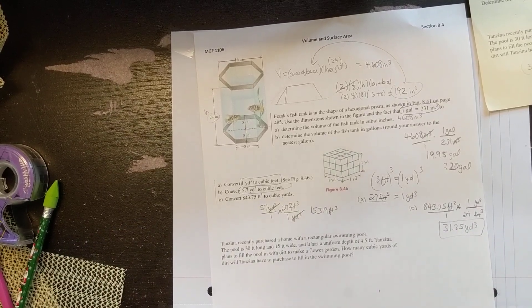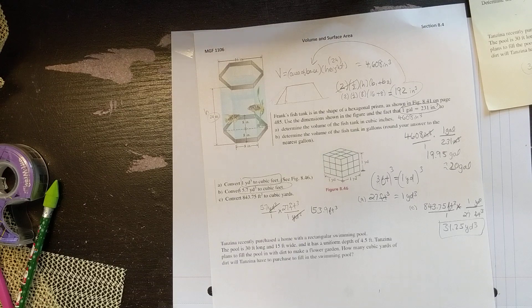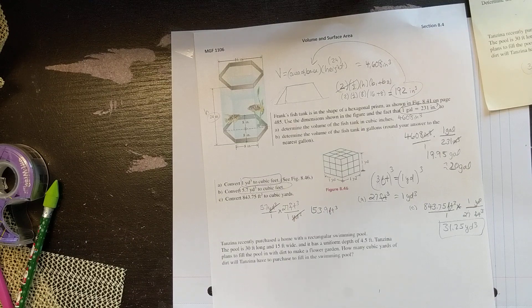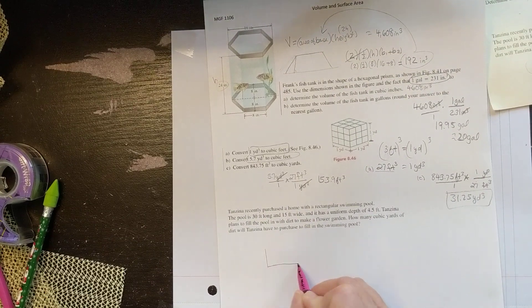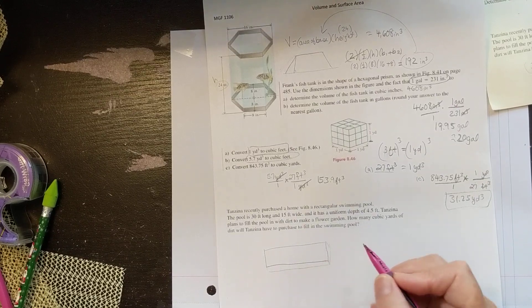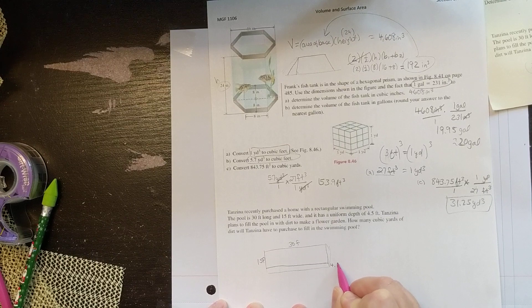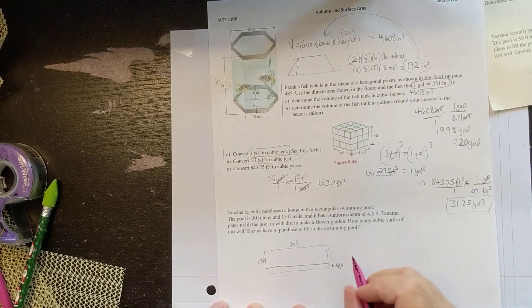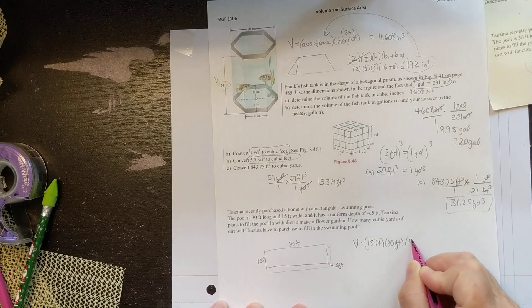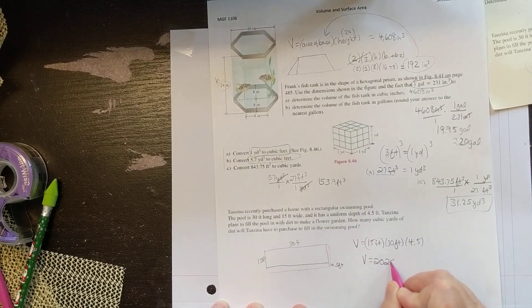Last one. Tenzina recently purchased a home with a rectangular swimming pool. The pool is 30 feet long, 15 feet wide and has a uniform depth of 4.5 feet. She plans to fill the pool with dirt to make a flower garden. How many cubic yards will she need to fill the pool? So here is her pool and she doesn't want to swim. She wants to plant a garden in it. It's 30 feet by 15 feet and it is 4.5 feet deep. So what is the volume? It's 15 by 30 by 4.5. So the volume of her pool area is 2,025 cubic feet.